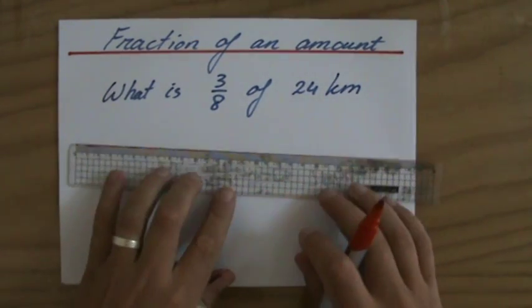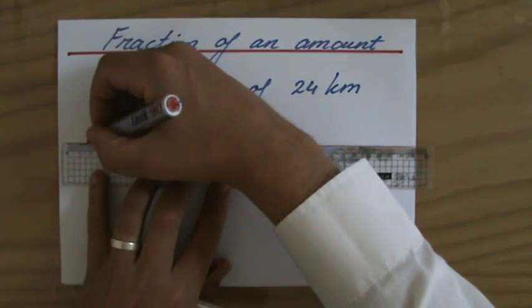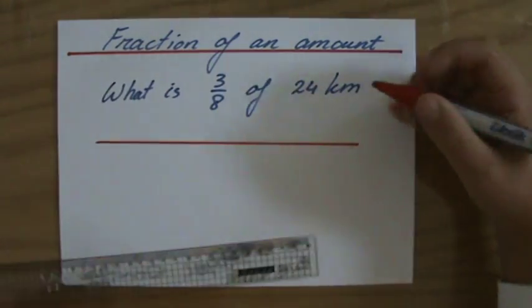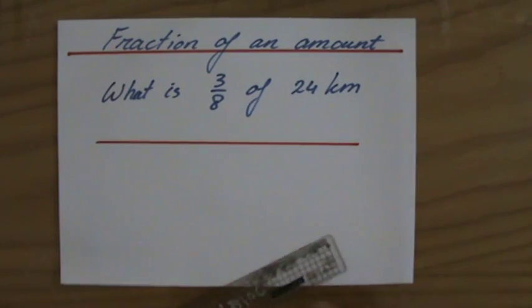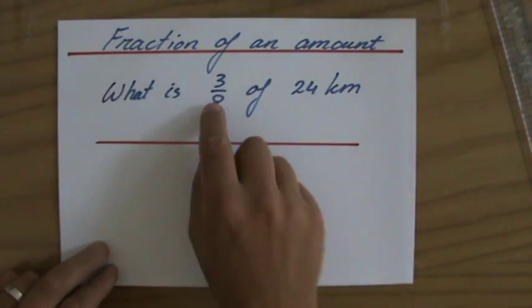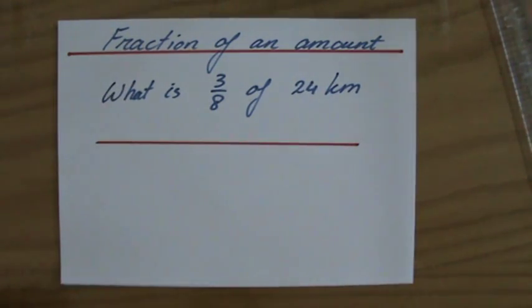Just to introduce it, I'm going to draw a line. That line is 24 kilometers long. But I'm not going to run all of it because I get so tired. I only run 3 eighths of it. So how far did I run?